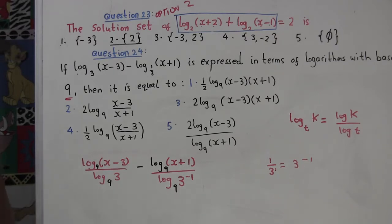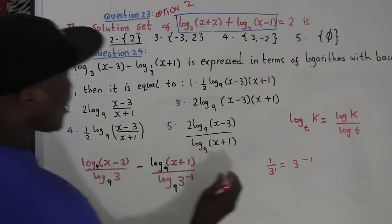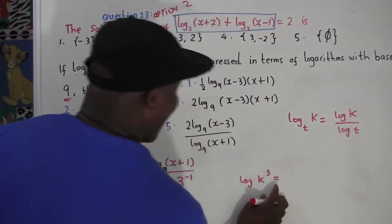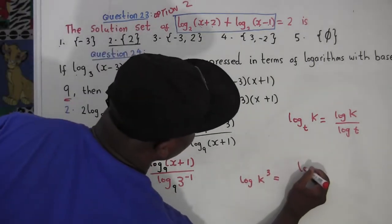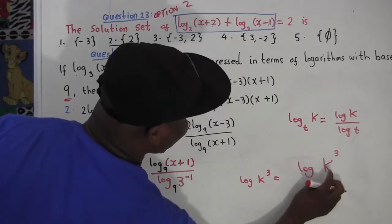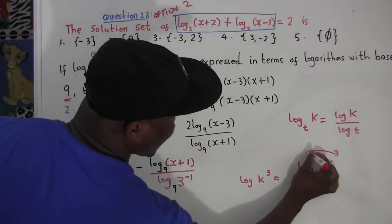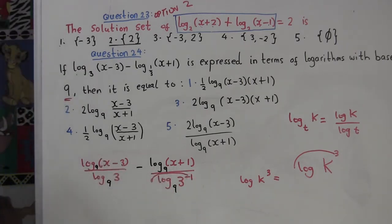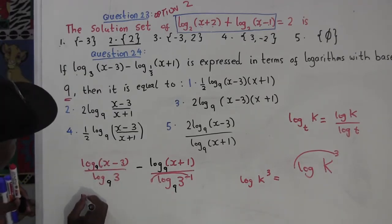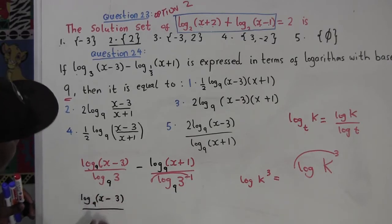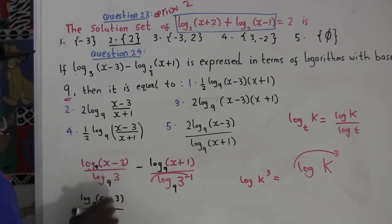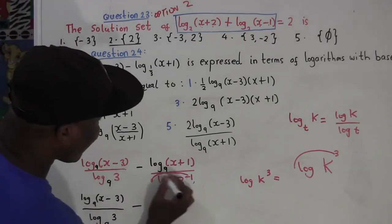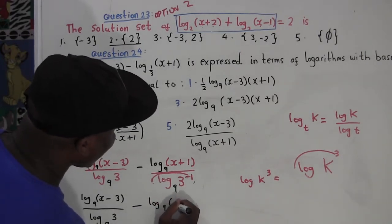Now, whenever you have log of a number raised to a power, you bring that power to the front. So for the term with log of 3 to the power negative 1 in the denominator, the negative 1 comes out front. We have log base 9 of (x minus 3) over log base 9 of 3, minus log base 9 of (x plus 1) over negative log base 9 of 3. The negatives cancel to give positive.